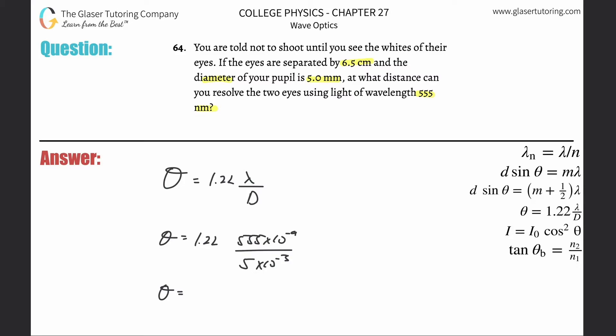Let's just go into the calculator and plug it in: 1.22 times 555 times 10 to the minus ninth divided by 5 times 10 to the minus three gives us a value of 1.35 times 10 to the minus fourth, and that's in terms of radians.